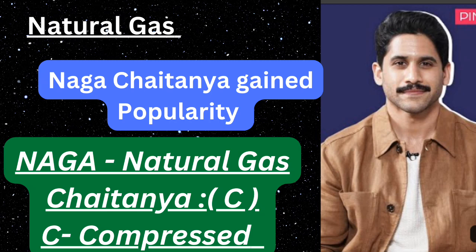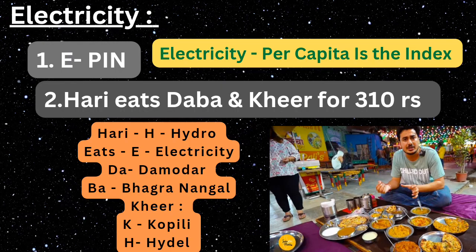The next shortcut: 'Naga Chaitanya gained popularity.' Here 'Na' and 'Ga' stand for natural gas, and 'Chai' contains C for compressed — meaning Compressed Natural Gas (CNG). CNG gained popularity because it replaces liquid fuels.